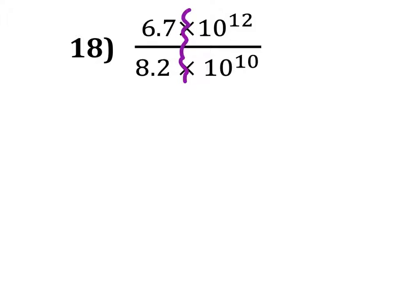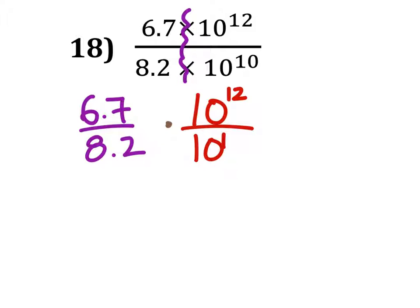I'm going to split this up and work with just the light terms. So I've got 6.7 divided by 8.2, and I'm going to multiply this. 10 to the power of 12 divided by 10 to the power of 10.